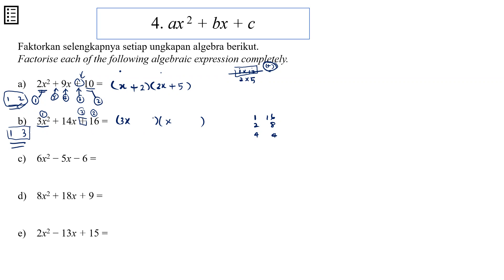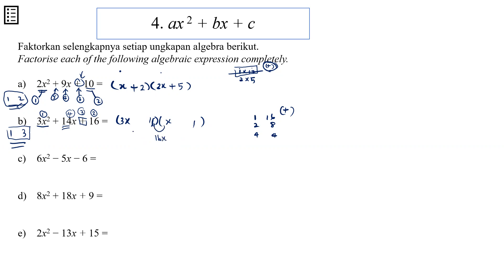Let's try one by one. With 1 and 16: the inner pair is 1x, and the outer pair is 48x. We need them to add up to 14 — this is definitely more than 14, so it's out. Let's swap: with 16 and 1, the inner pair is 16x and the outer pair is 3x. That's already too much — 16x alone is out. So we can cancel 1 and 16.